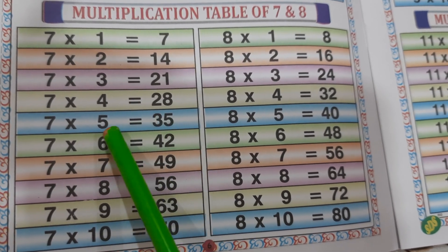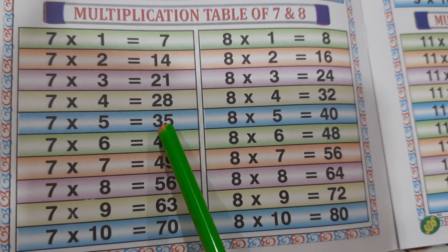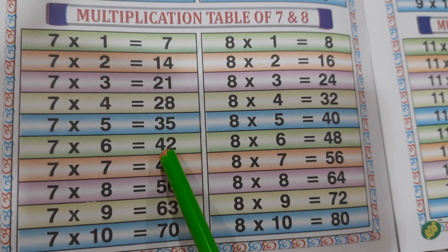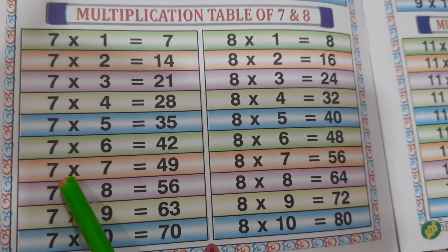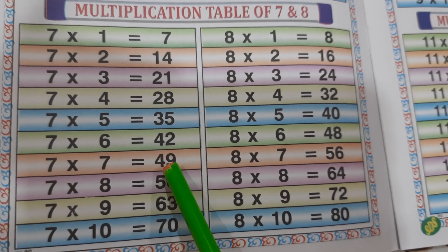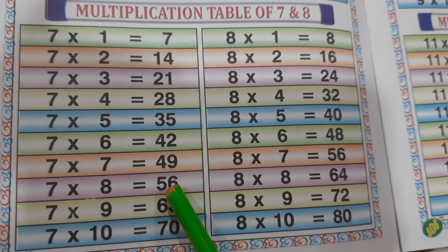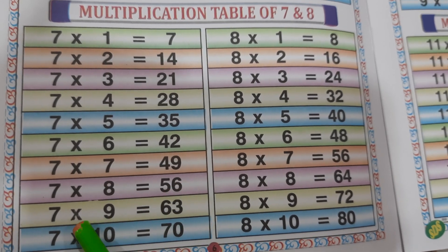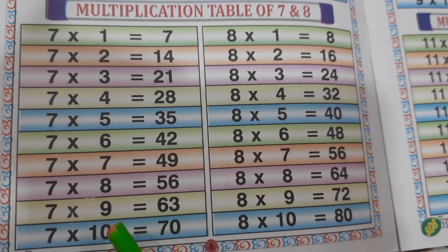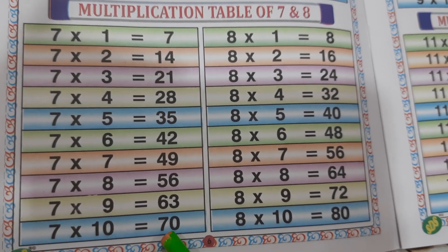7 5's are 35. 7 6's are 42. 7 7's are 49. 7 8's are 56. 7 9's are 63. 7 10's are 70.